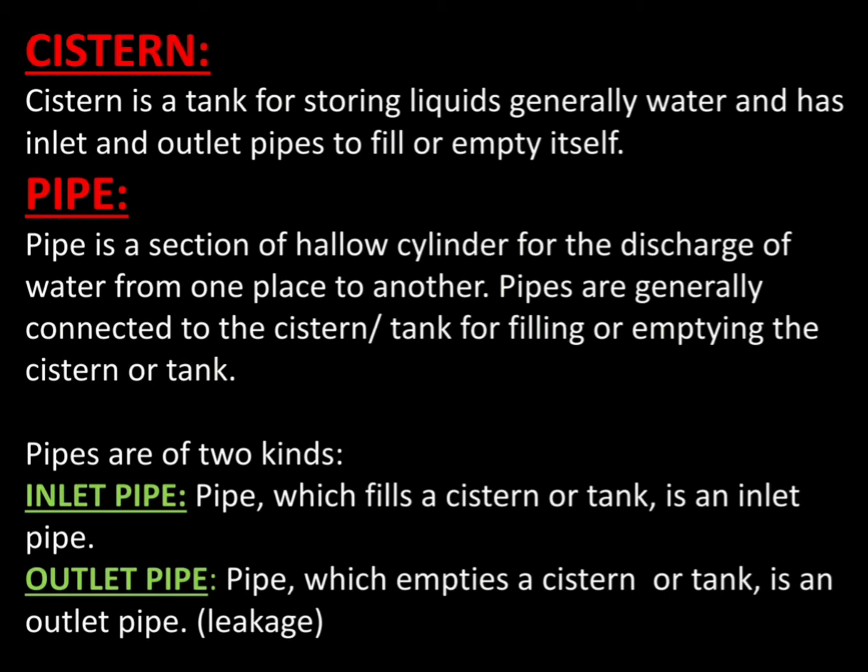Pipes are of two kinds. Inlet pipe: Pipe which fills a cistern or the tank is an inlet pipe. Outlet pipe: Pipe which empties a cistern or the tank is an outlet and it is also called leakage.